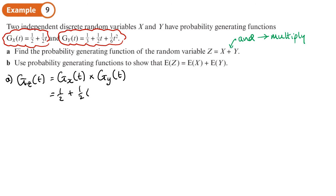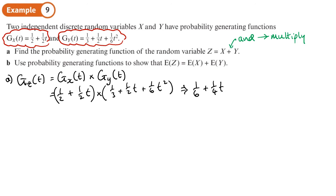So next is just multiplication: I've got (½ + ½t) times by (⅓ + ½t + ⅙t²). This is just multiplying out brackets — you need to be careful. So: ½ × ⅓, then ½ × ½t, then ½ × ⅙t². Now multiply everything by ½t: ½t × ⅓ gives ⅙t, then ½t × ½t gives ¼t², and ½t × ⅙t² gives 1/12 t³.